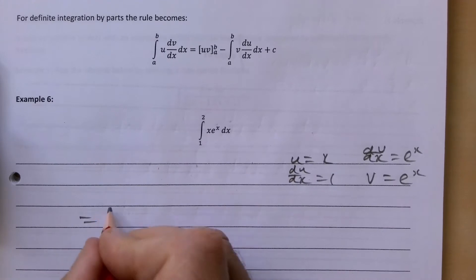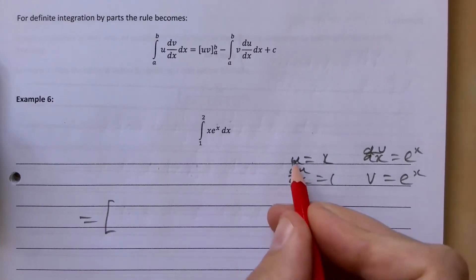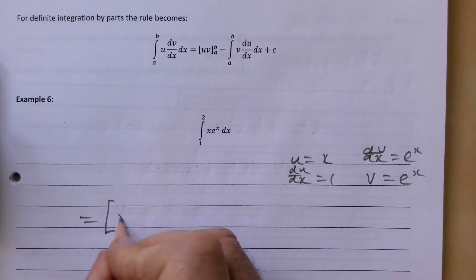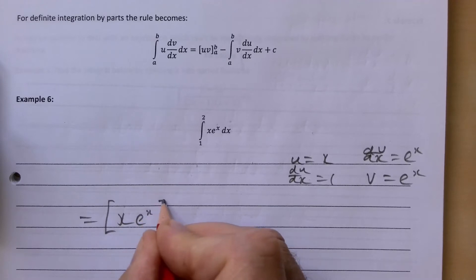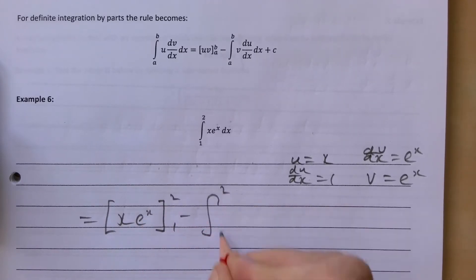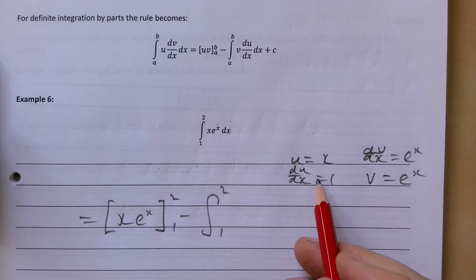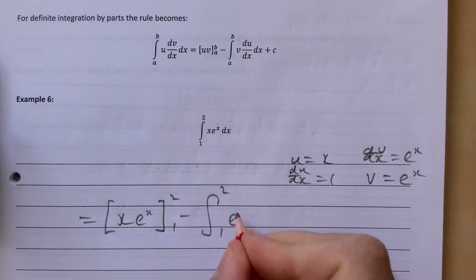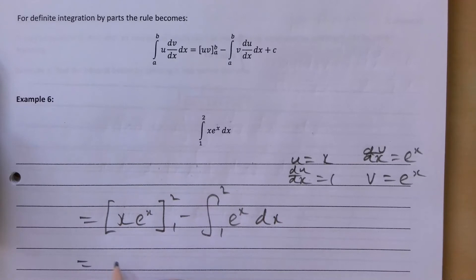So how does this definite integral work out? We get uv which is x e to the x, that's between 2 and 1, take away the integral between 2 and 1 of v du by dx. So it's v du by dx, so it's just going to be an e to the x.